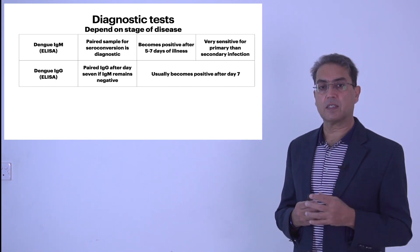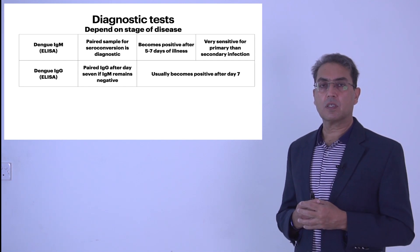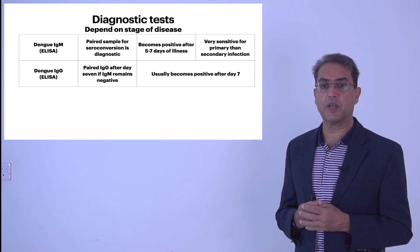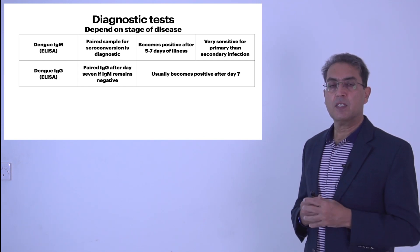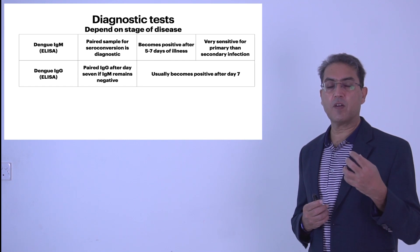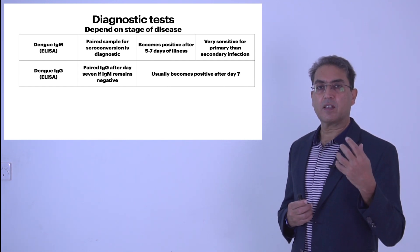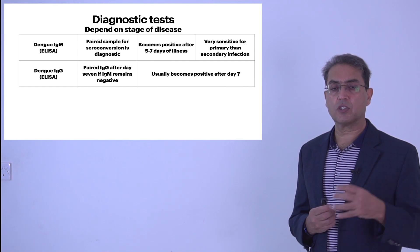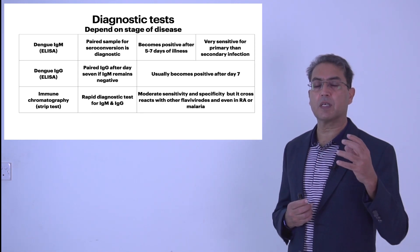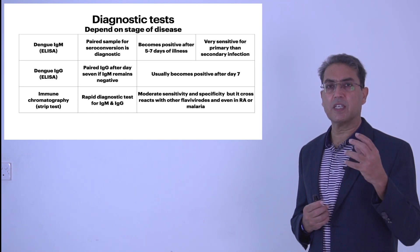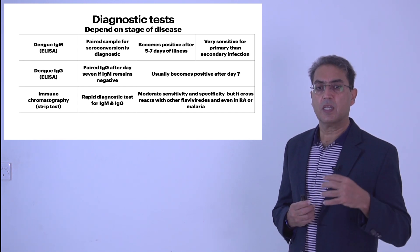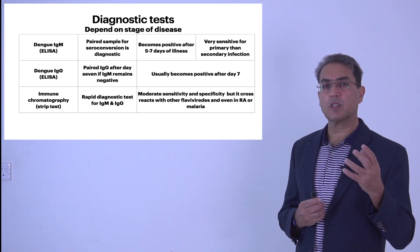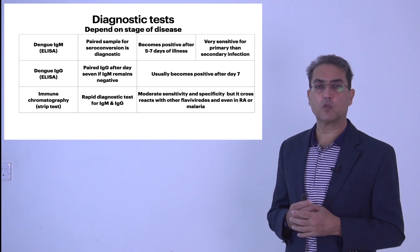For IgG antibodies, also done by ELISA, a rising titer is very suggestive and confirmatory of dengue. IgG usually becomes positive after day seven, so it may not be useful in the acute febrile phase but can confirm diagnosis in convalescence with paired sampling. Rapid diagnostic tests using immunochromatography — strip tests — are available for both IgG and IgM, but they have poor sensitivity and cross-reactivity with other antigens, including other flavivirus infections, rheumatoid arthritis, and malaria, so they are generally not recommended.